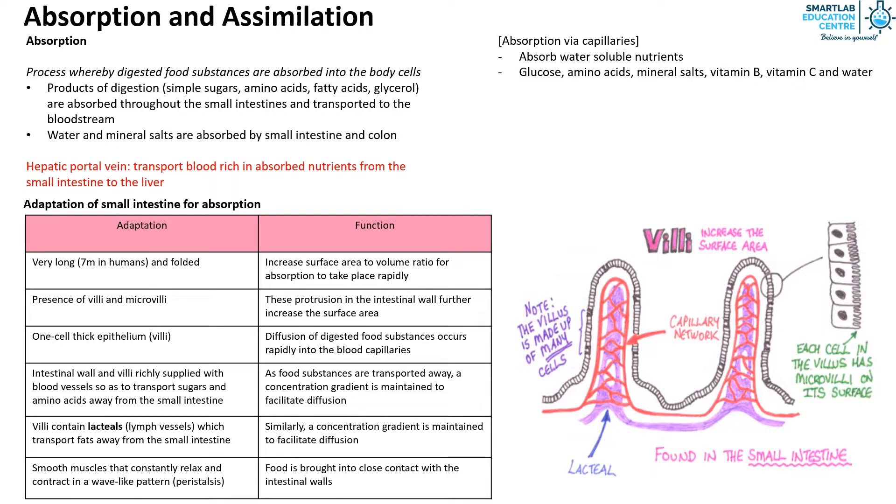The simple sugars and amino acids diffuse through the walls of the villi into the blood capillaries. These capillaries converge into the hepatic portal vein, which then brings these nutrients to the liver.